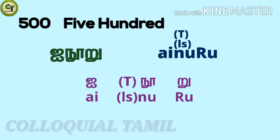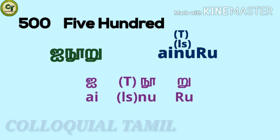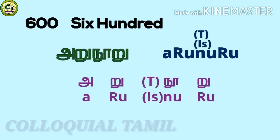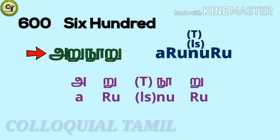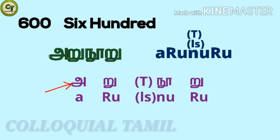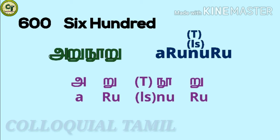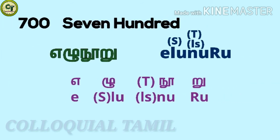For 500: aim noo ru. For 600: aru noo ru. You just add these two letters to noo ru. A is a short sound vowel, ru is a short sound letter. When joined with noo ru, it becomes aru noo ru.